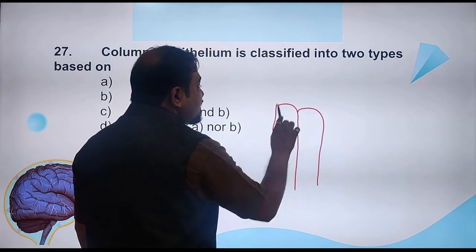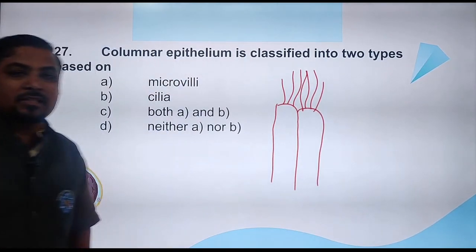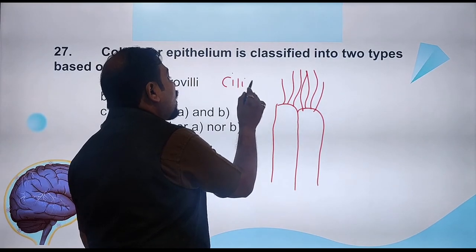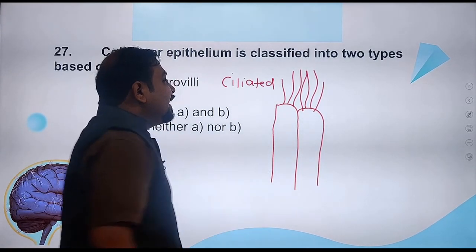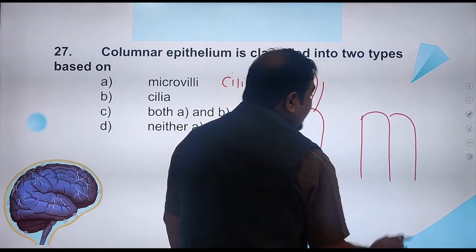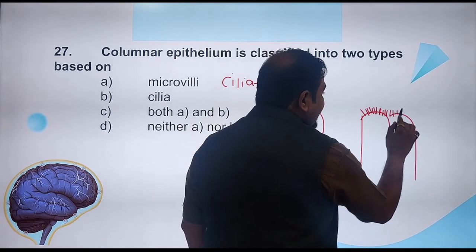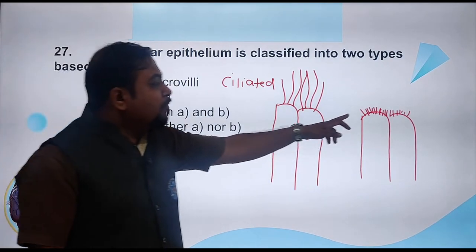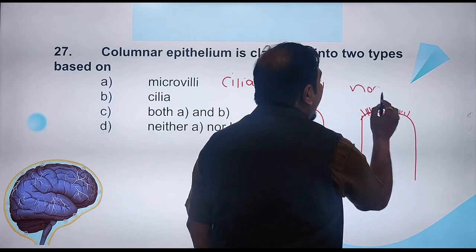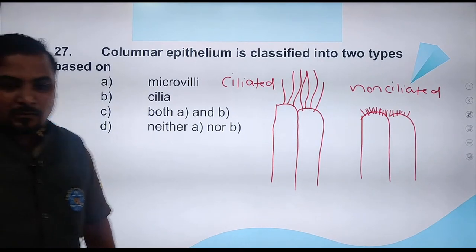One columnar epithelium has cilia inside it — at the apical end cilia are found. So where cilia are present, it is called ciliated epithelium. The other columnar epithelium has microvilli in place of cilia. Where there are no cilia but microvilli, that is known as non-ciliated epithelium. That is the logic.